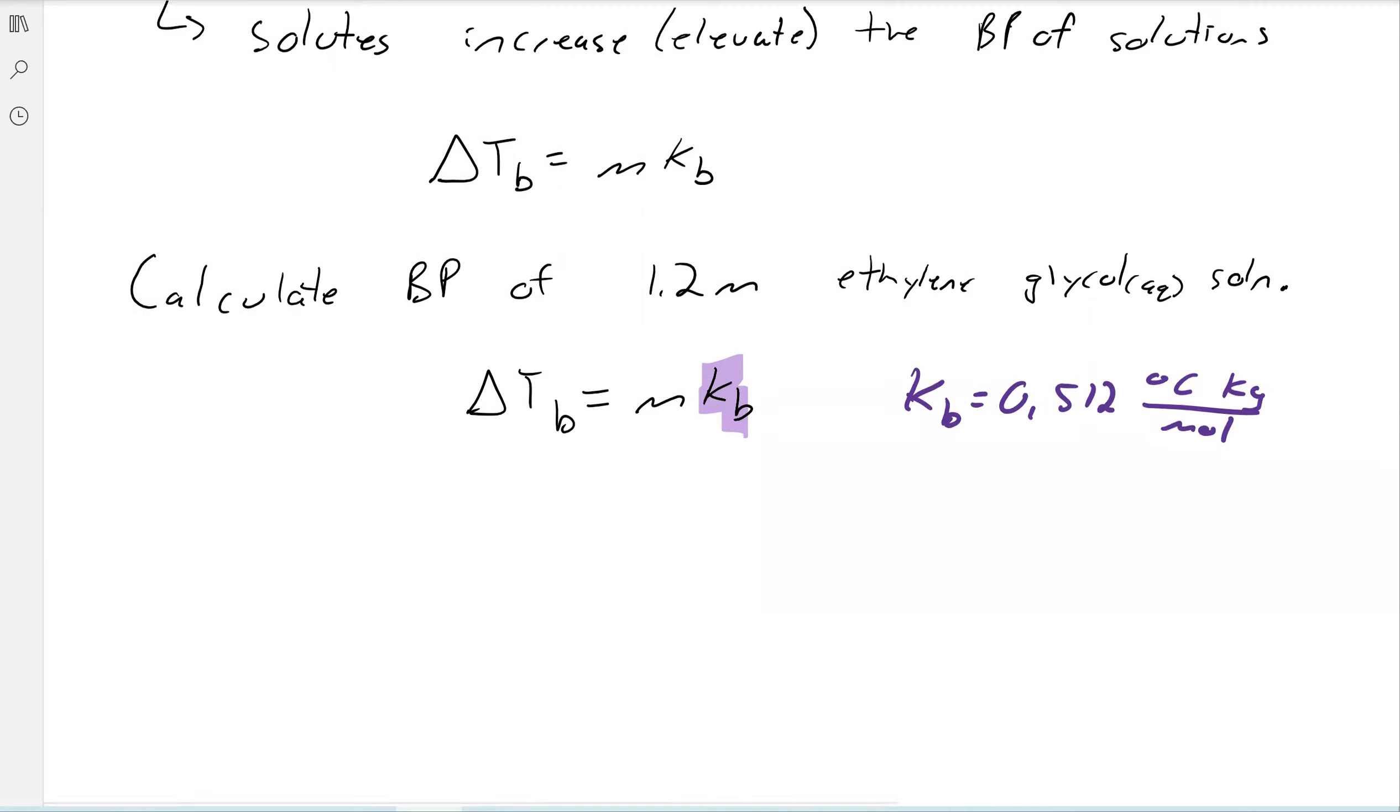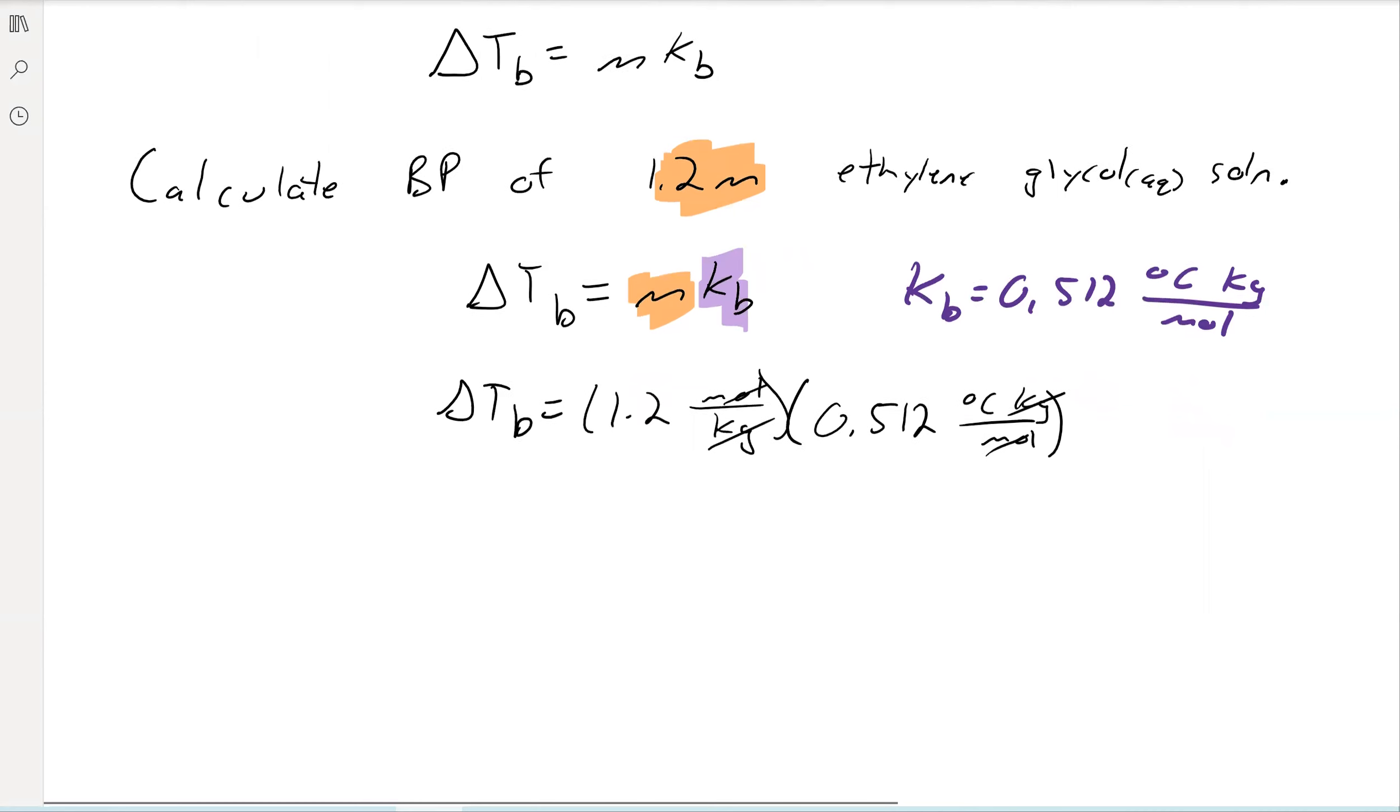And then of course, here, we want to take this 1.2 molal, plug it into there. And then we get delta Tb is equal to 1.2 moles over kilograms, right? Those are the units of the molal. And then 0.512 degrees Celsius kilogram over mole. Mole, mole, kilogram, kilogram, cancel out. We're left with the degree Celsius. And we get 0.61 degrees Celsius.